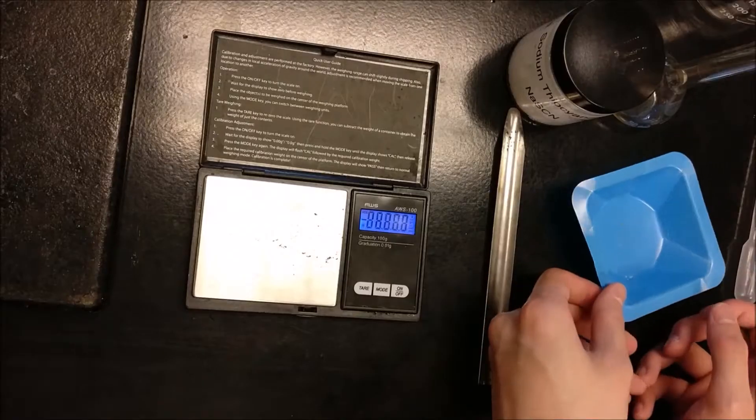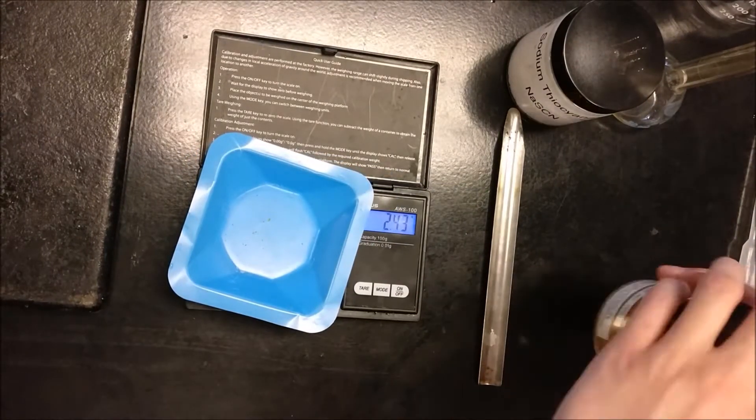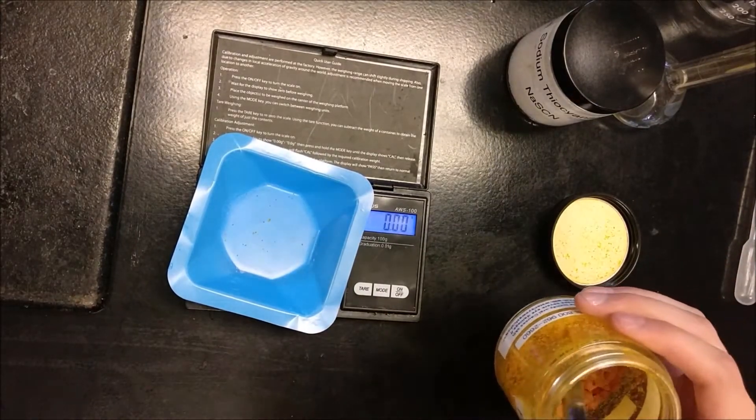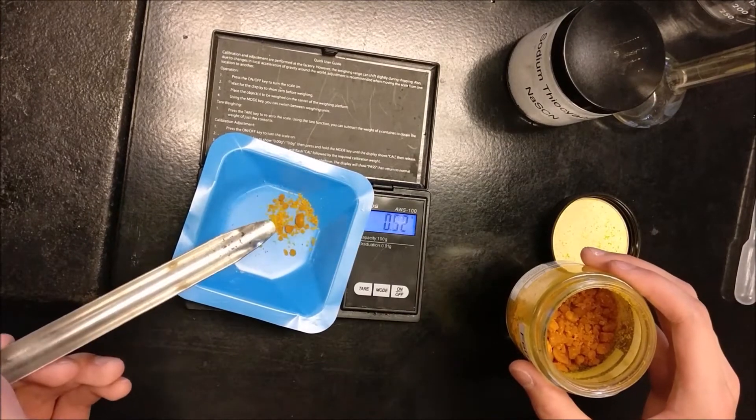First, zero off the weight boat. Then measure approximately 0.5 grams of iron-3-chloride hexahydrate and record the weight you measure out.